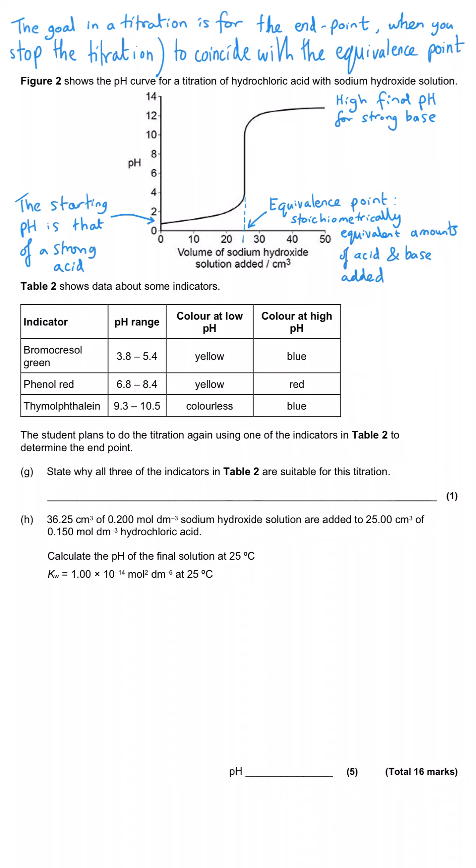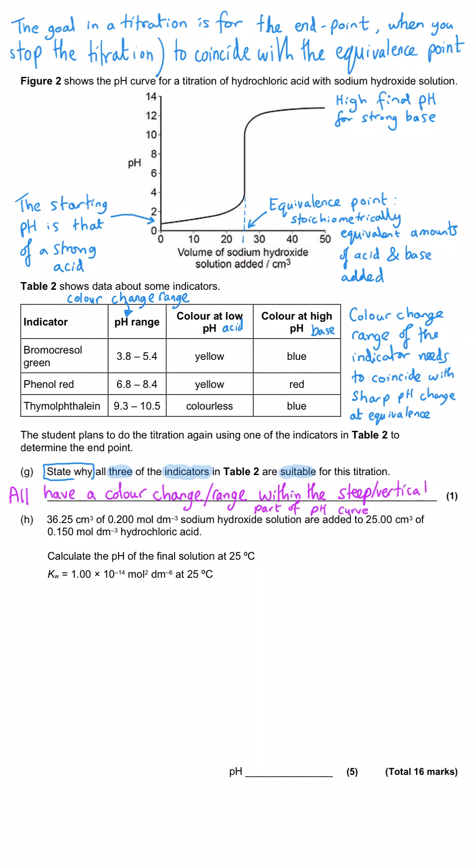Table two shows some data about indicators. We've got three different indicators, and we're told the pH range over which they change colour, and then we've got the colour in low pH and the colour in high pH for each of them. The student is planning to do the titration again using an indicator to determine the end point. We're asked to state why all three indicators are suitable for this titration.